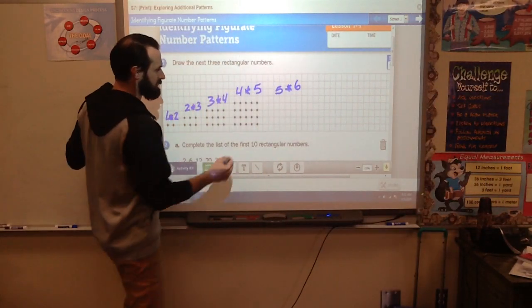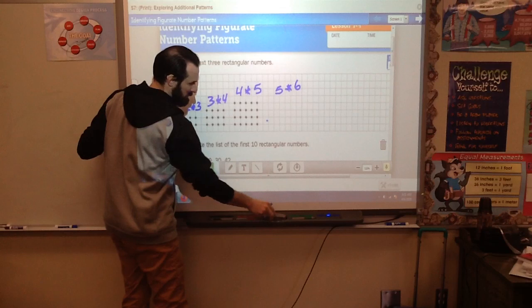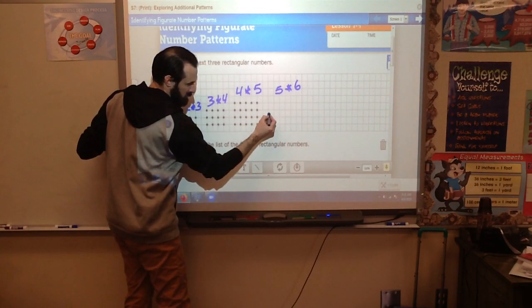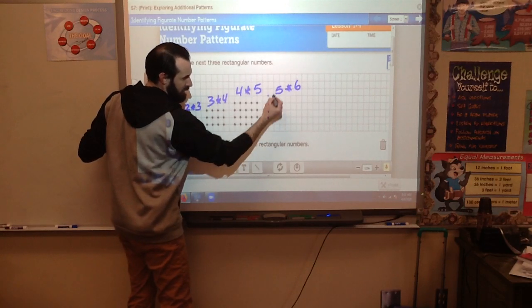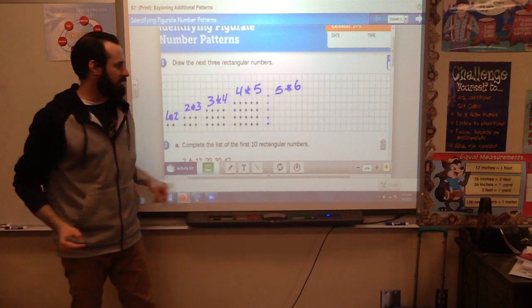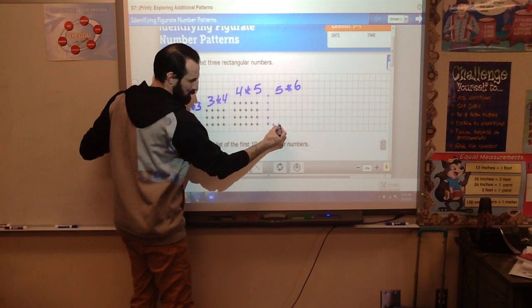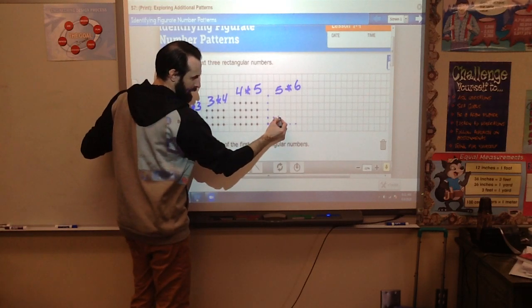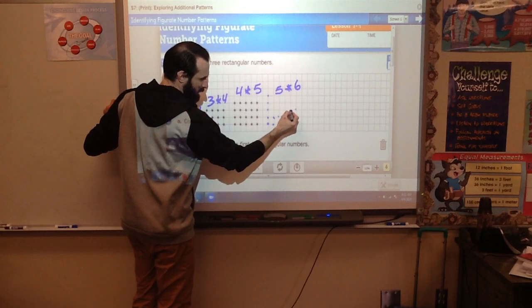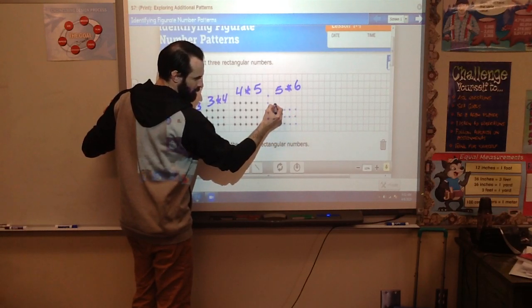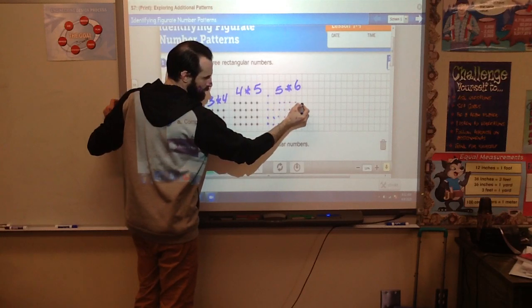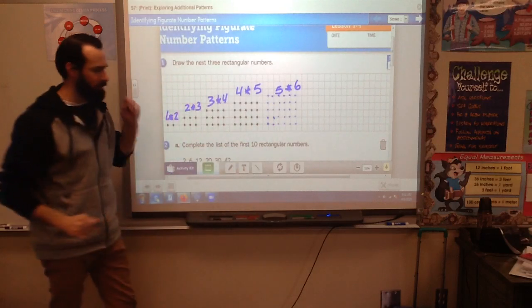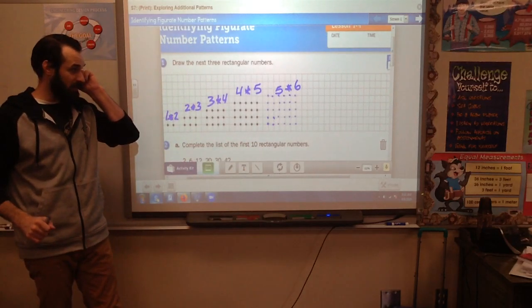Now they want you to draw the array. My array probably isn't going to be quite as nice because of the way the smart board's calibrated, but you should make a 5 by 6 array. I've got my five tall there and it should go out six, so go ahead and finish your array just like I'm finishing mine.